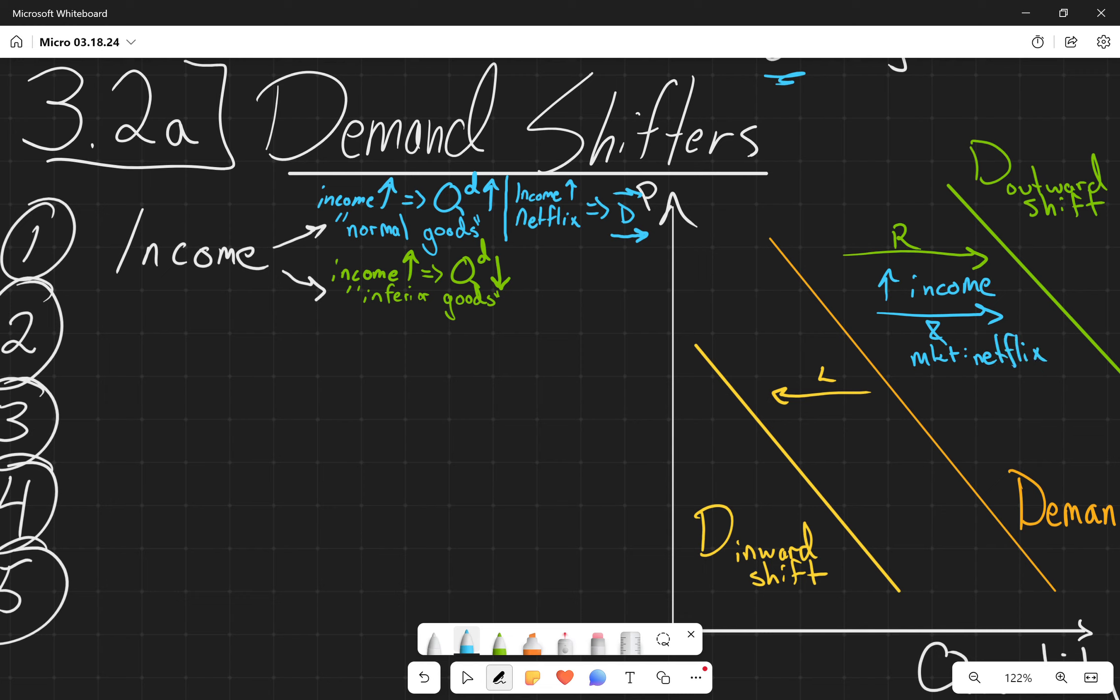And you will not be given edge cases where you won't be able to identify whether or not it's an inferior or a normal good. It'll be very obvious what kind of good it is, because there's only a few examples that are commonly used. Myself, the ones that I'm using now, and the ones that the book uses. So shouldn't be to trick you. If you think it is, send me an email, I'll give you the points, no big deal.